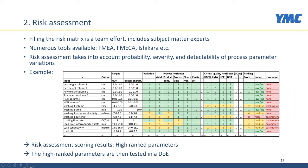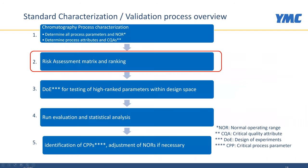High-ranked parameters are then tested in a design of experiments fashion. In this matrix, the loading flow rate and interconnected state time are included. Due to the additional parameters in Capture SMB, the matrix size is larger than in single column chromatography. But the way the risk assessment is done and the way the DOE is set up is the same as in single column chromatography.